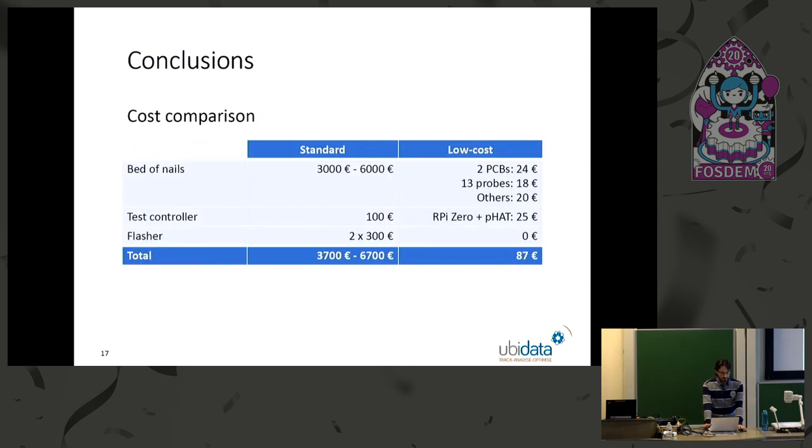So the conclusions of this project is the cost comparison, purely looking at the hardware, not the effort to develop the software. Initially, we asked a few codes to build a standard test fixture from other companies that specialize in this. And we got numbers ranging from 3k to 6k. They had two additional parts. They're roughly in a few hundred euros. Now, if you look at the price of all the components we used, all together, it's less than 100 euros.